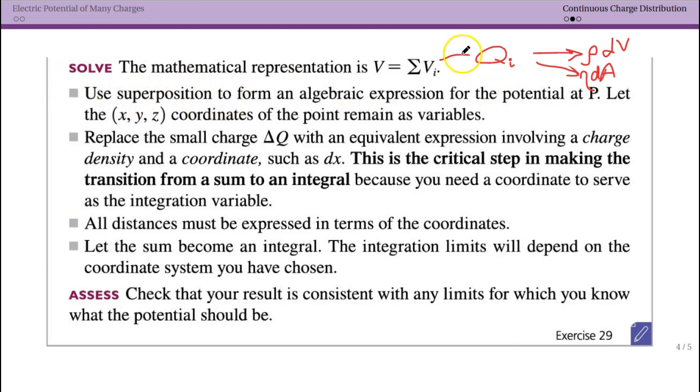So use superposition to actually set this up initially as a sum, and make sure that you're leaving as much as possible in terms of variables. We're going to replace that delta Q in terms of our charge density and our coordinate. But again, for the volume or the area, you probably want to only integrate over one of these for most things you can. And so then you'll have to actually say this volume is some sort of area times the thing you're integrating over. So again, this is the critical step. This is calculus-based physics, doing this calculus is something that you're expected to be able to do.